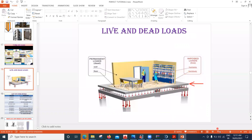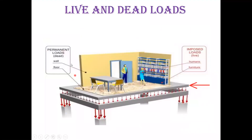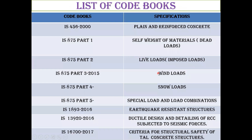A wall is a dead load — it stays in place. The floor is also a dead load. Furniture, on the other hand, is a live load — I can move furniture from one room to another. Human beings are also live loads. Live loads are sometimes called imposed loads.